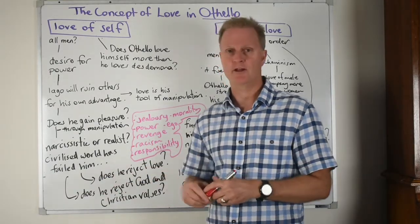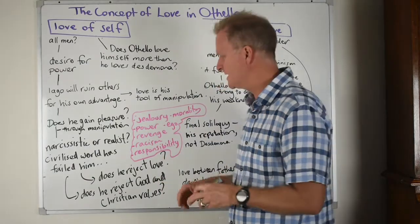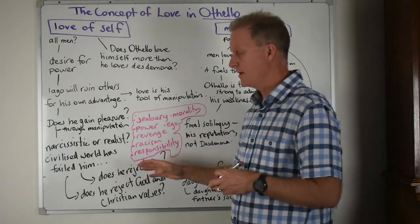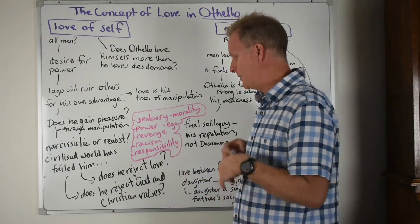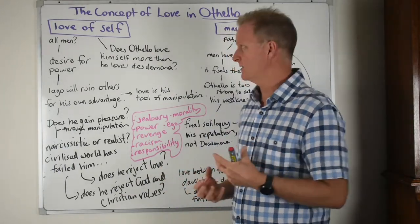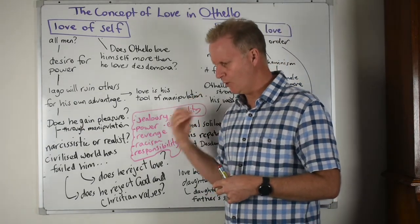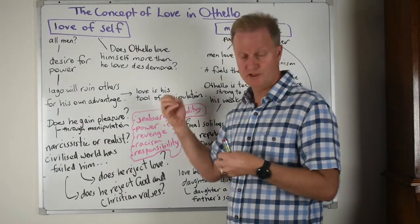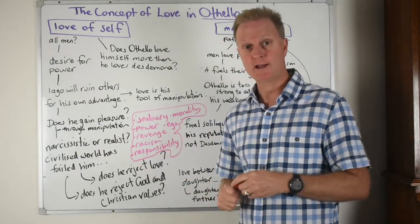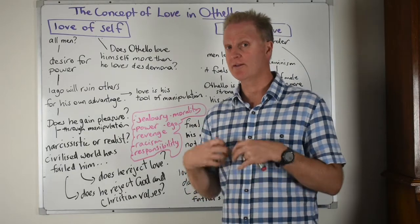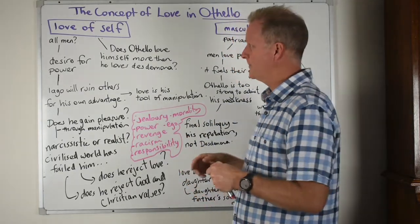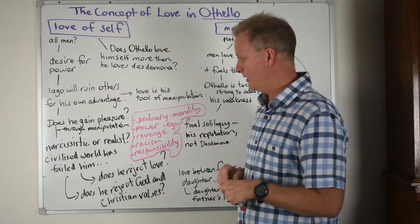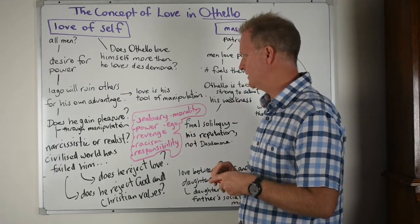Because the civilized world had let Iago down, he decides to go down the other path — survival of the fittest, the strongest, the smartest. Because the civilized world has failed him, he rejects love, rejects God and all Christian values. An interesting argument is that it wasn't Othello and Desdemona's love that was the problem — it was more Othello's decision to promote Cassio over Iago. And maybe that was because Othello's self-love meant he didn't follow military customs and tradition.